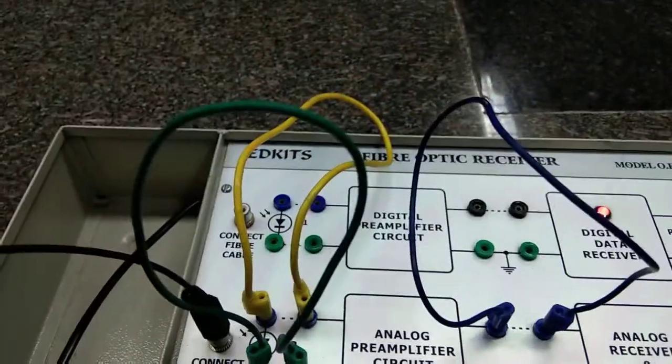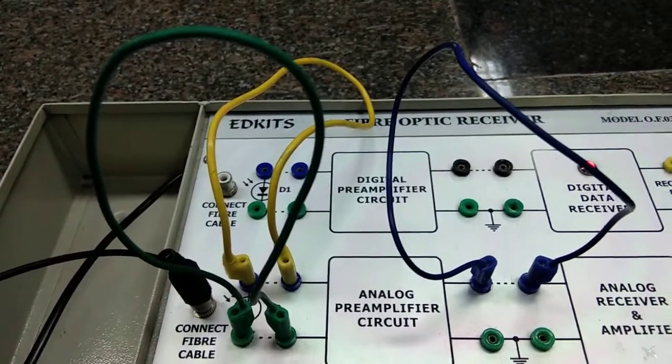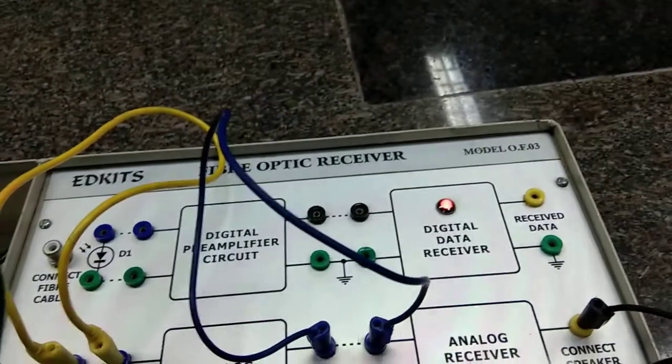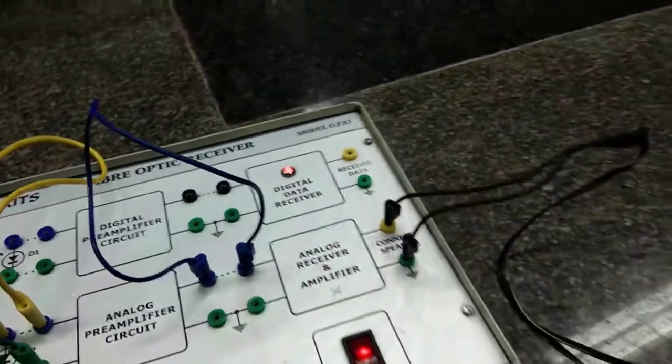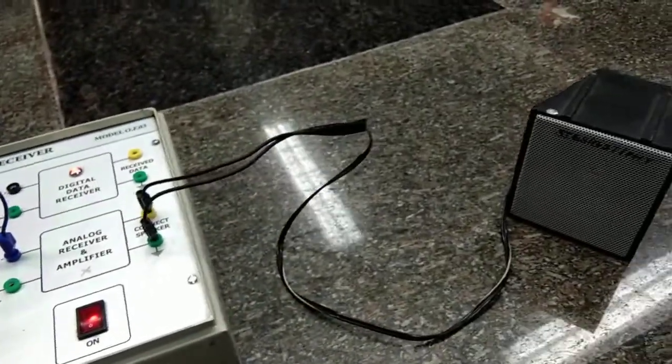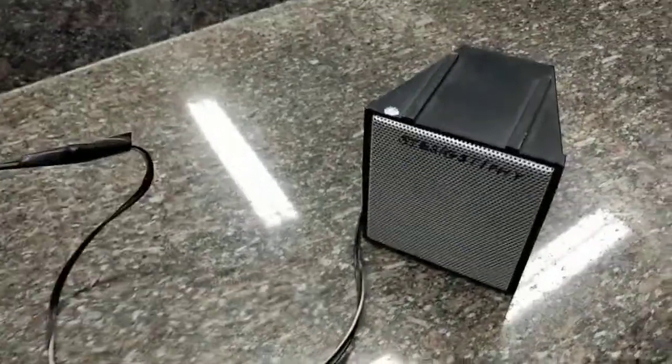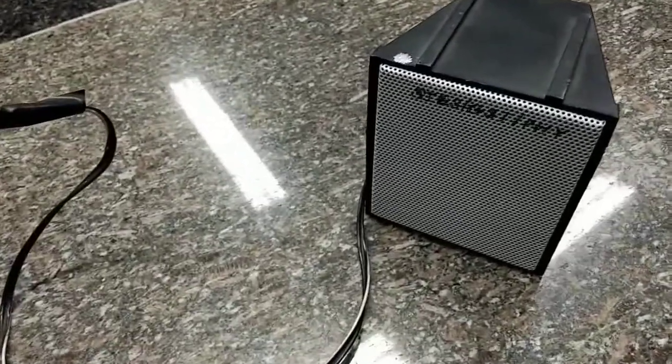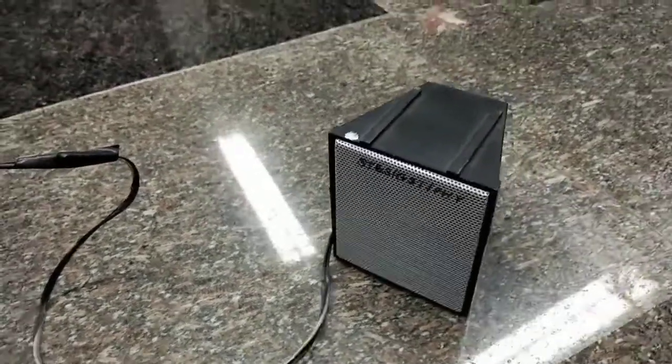At the receiver end, there are preamplifiers here which would amplify your signal back to the original strength. And then there is a digital data receiver which would convert the original sound signal. That means the light signal would get converted again into its sound signal. So whatever sound which is caused in the microphone, you would be able to hear that sound clearly in the speaker.